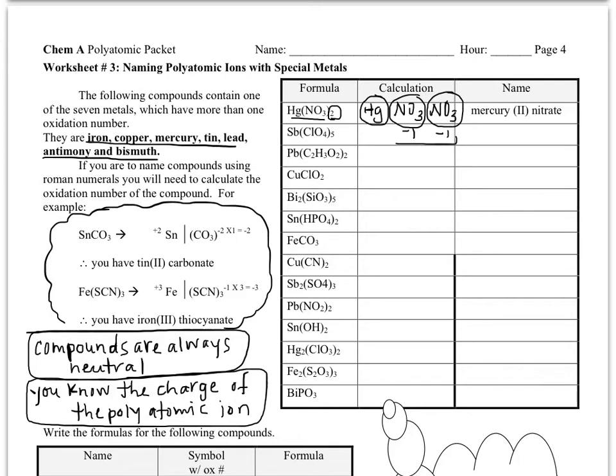And so if we add them together, we have an overall negative two charge coming from our polyatomic ion. Which means whatever the charge of that one single mercury is, we have to be able to add it up with negative two and get zero.